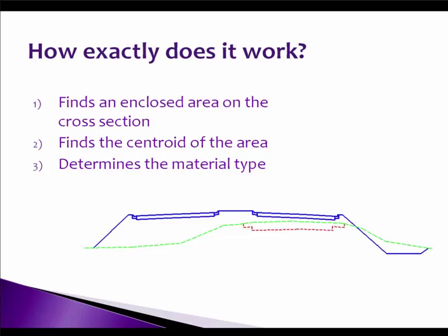How exactly does Geopack determine the areas when calculating earthwork? First, it has to find an enclosed area on our cross sections. Once it does that, it finds the centroid of the area — it may not be exactly in the center but it's close enough. Once it finds the centroid, it determines the material type and from that it figures out whether it's cut, fill, or proposed undercut. It's very important to understand how it works so that when you set up your earthwork dialog, you know what Geopack is looking for.